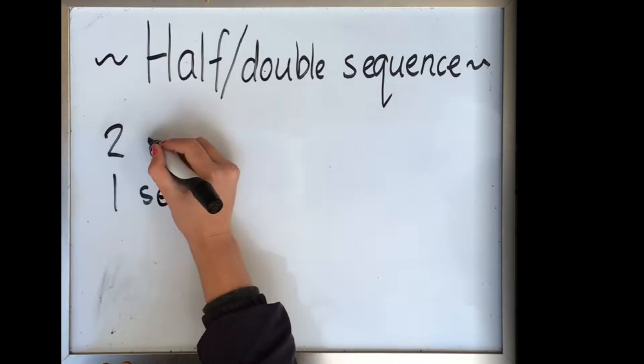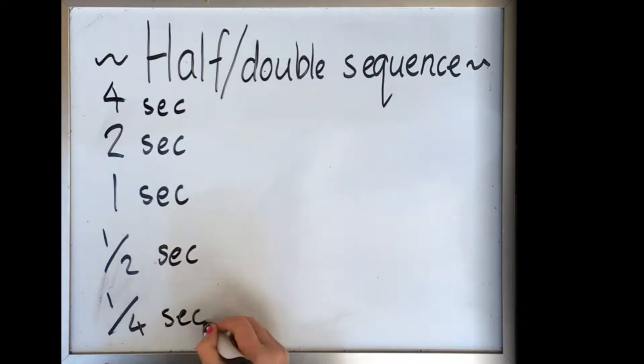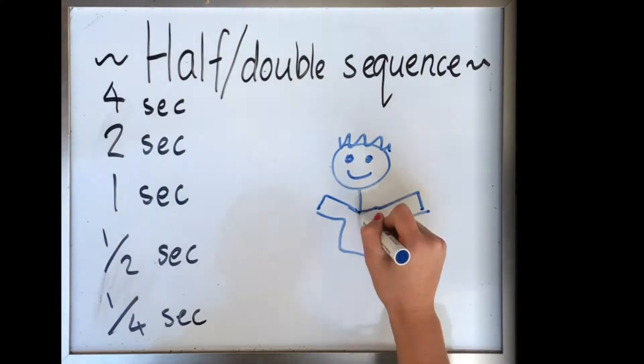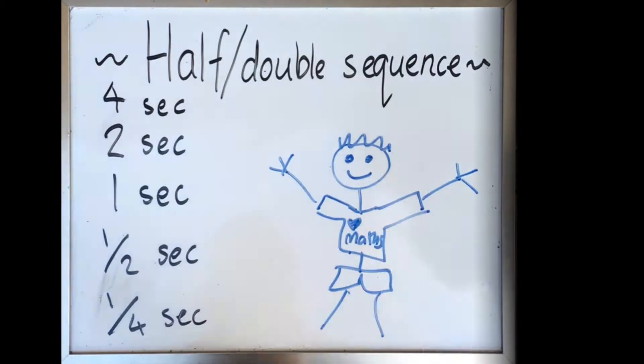The longer amount of time it takes the shutter to go around, the blurrier the image will be. So a shutter speed of 4 seconds or even 8 seconds will be a lot blurrier in comparison to a fourth or an eighth of a second.